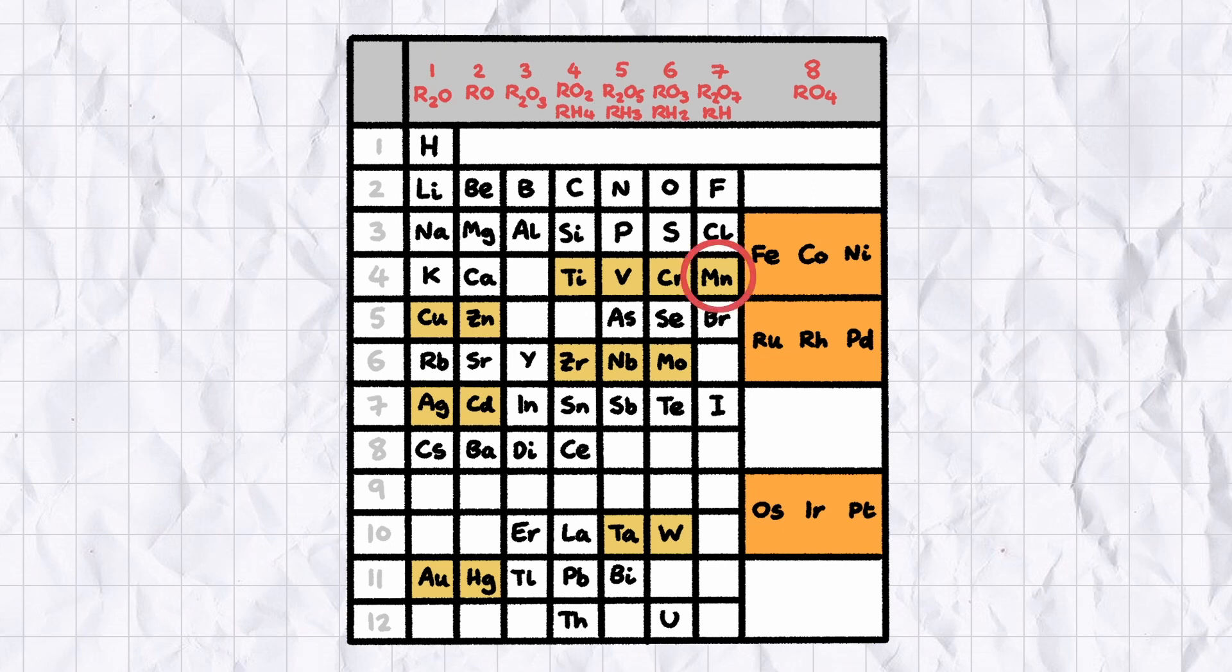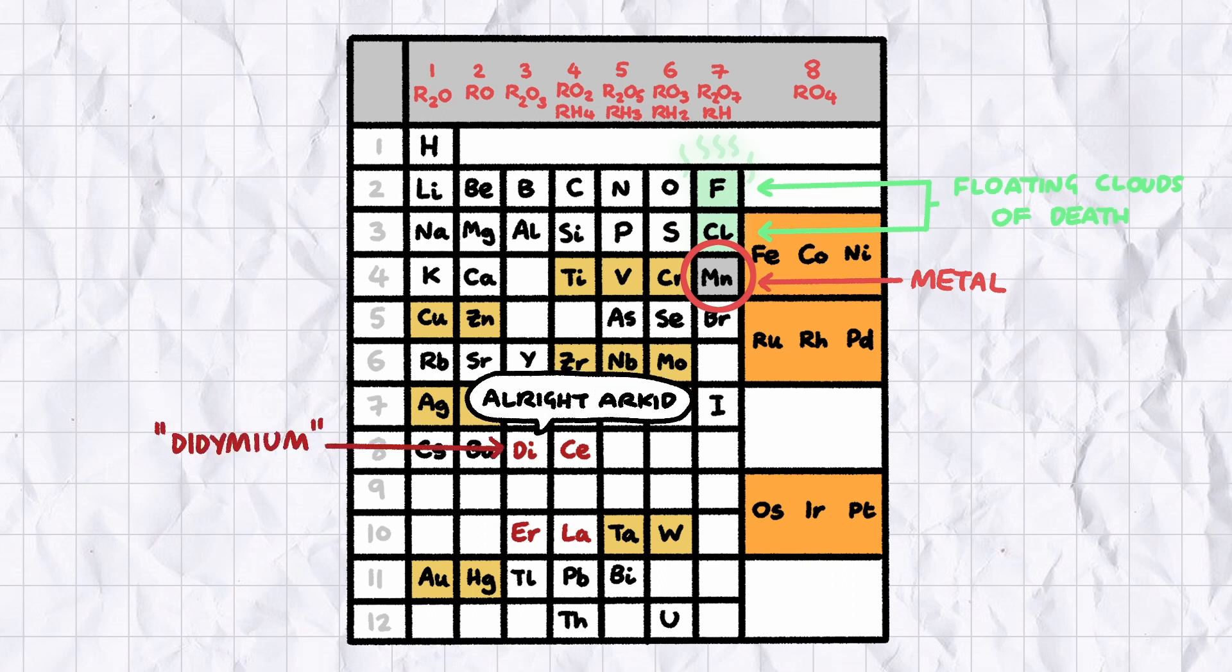So you have manganese, a hard, brittle metal, in the same group as poisonous, highly reactive gases like chlorine and fluorine. The F-block elements are incorrectly spaced and ordered due to some inaccurate measurements, with Didymium, or as I like to call it, the Pete Best of the Periodic Table, later turning out to be an impure mix of Praseodymium and Neodymium.